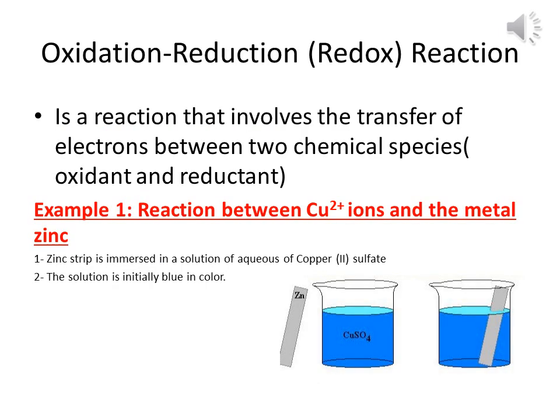Oxidation-reduction, or redox reaction, is the reaction that involves the transfer of electrons between two chemical species: an oxidant and a reductant. To understand the oxidation-reduction reaction, we are going to do the first example.